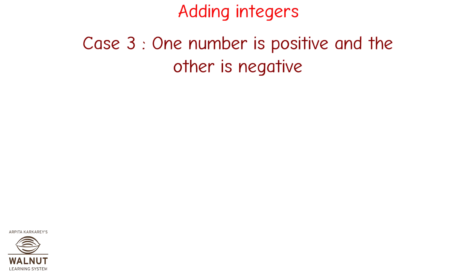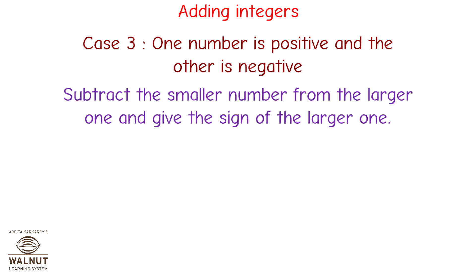Case 3: one number is positive and the other is negative. Subtract the smaller number from the larger one and give the sign of the larger one.